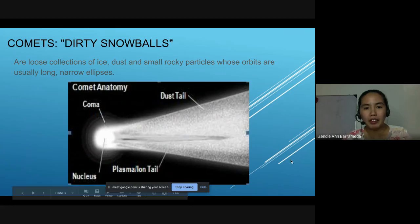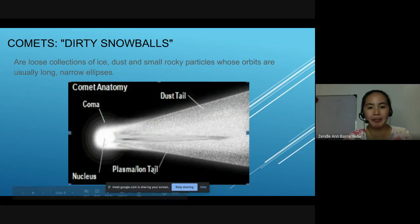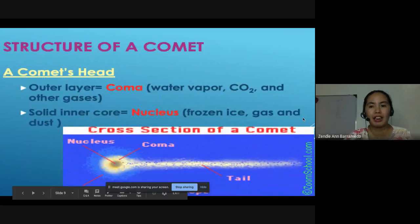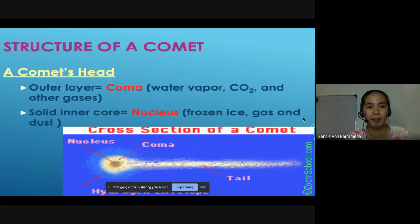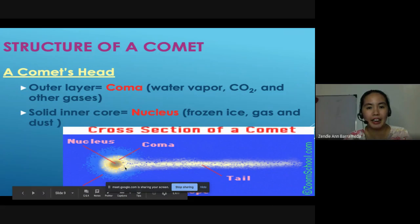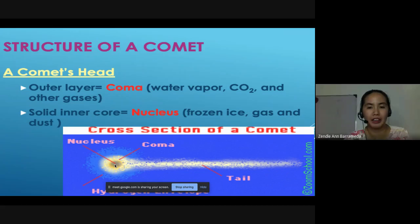The picture shows the comet anatomy. We have the coma, nucleus, the plasma or ion tail, and the dust tail. Let us study the structure of a comet. A comet's head has an outer layer known as the coma, which is composed of water vapor, carbon dioxide, and other gases. The solid inner core is known as the nucleus, and it is made up of frozen ice, gas, and dust.